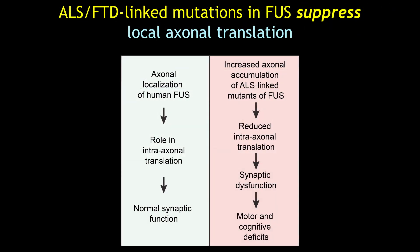Using these animals, we uncovered a novel role of FUS in intra-axonal protein synthesis, which we found was impaired prior to symptoms and correlated with the accumulation of FUS mutants. These findings demonstrate that reduced axonal protein synthesis is a component of ALS and FTD pathogenesis, and shed light on our basic understanding of how local translation can be regulated.